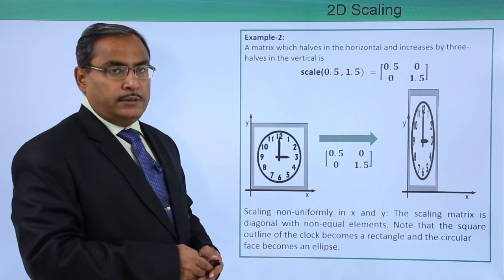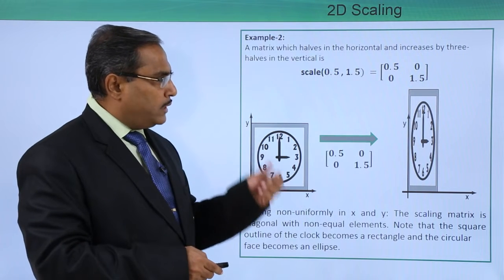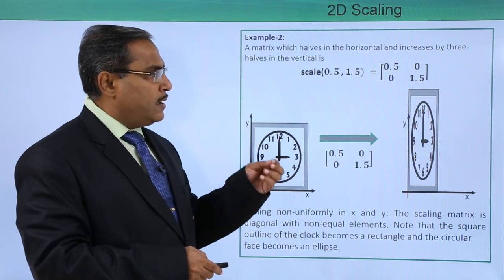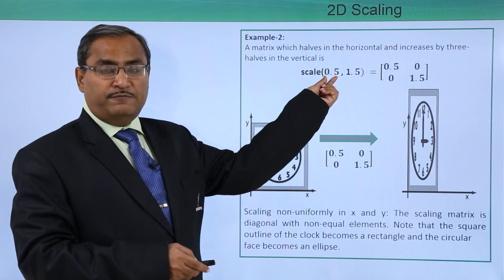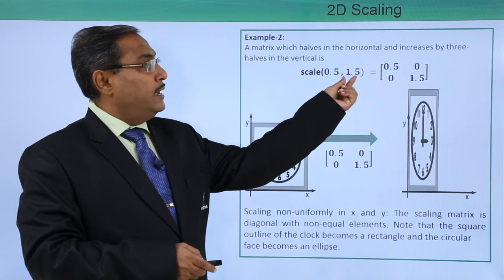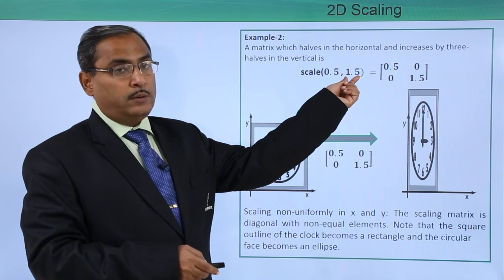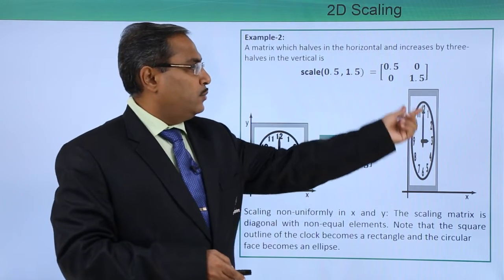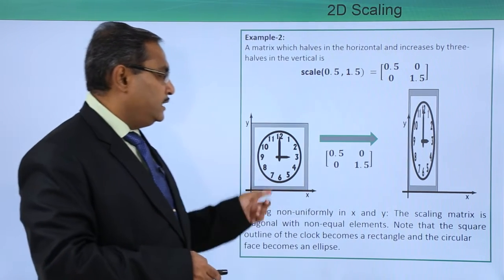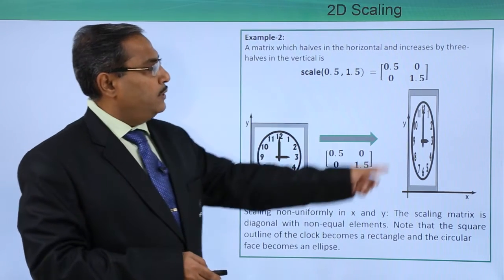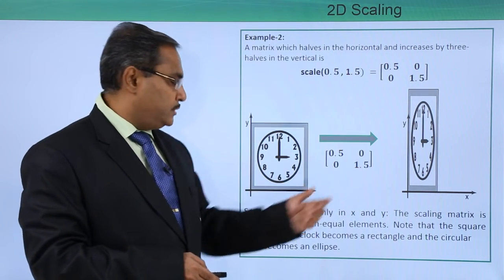In this particular example, example number 2, a matrix which halves in the horizontal and increases by 3 halves in the vertical. Sx will have the value 0.5 because half in the horizontal, and 3 halves in the vertical means Sy will be 1.5. We have put that one and similarly if you go for this, this particular length will be half and this particular length will be 3 halves. Accordingly, the corresponding diagram has changed its scaled shape.